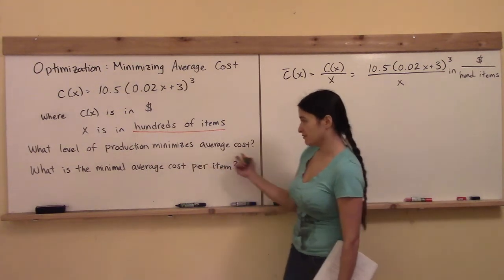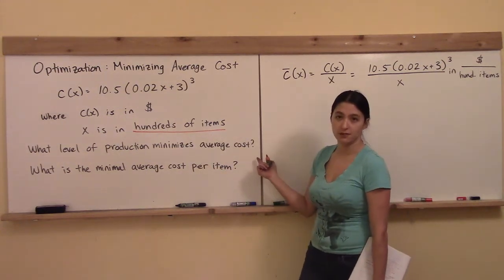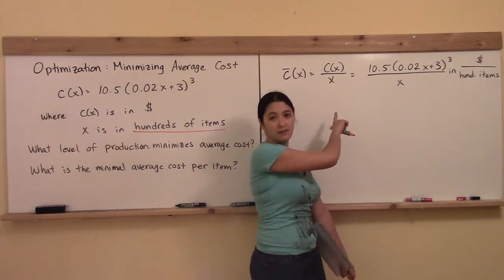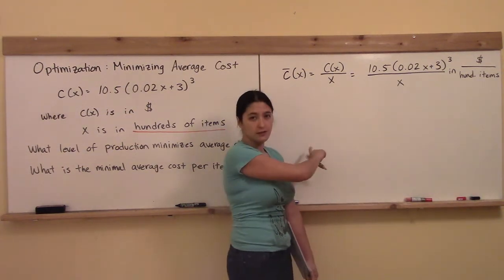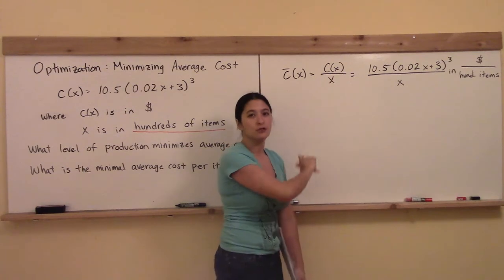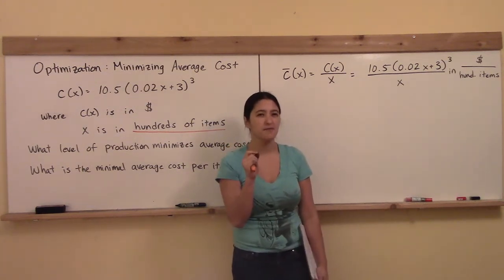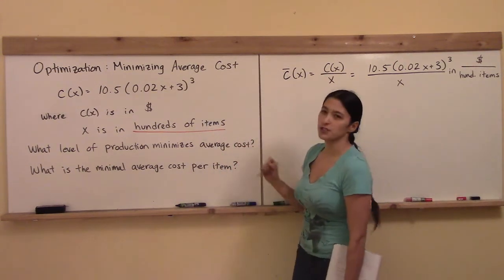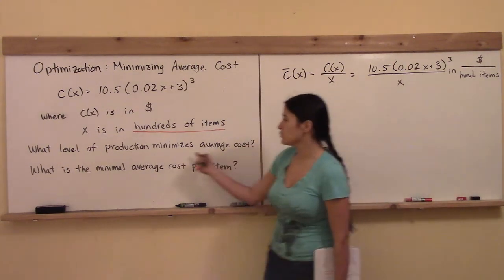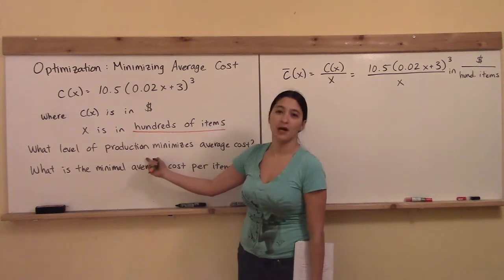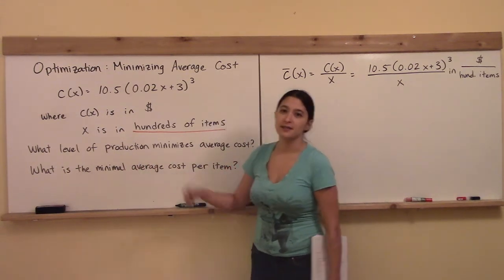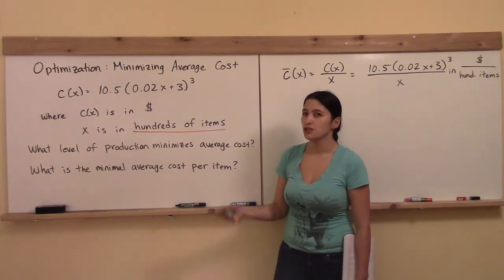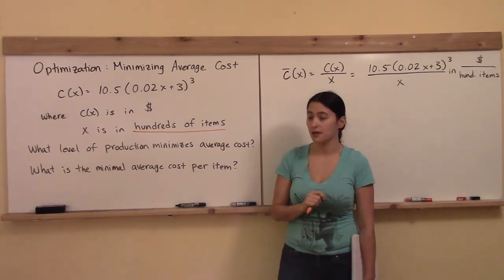We're going to have to keep that in mind the entire time as we try to answer the question: what level of production minimizes average cost? In the usual way, we will form average cost, take its derivative, solve for the critical points, locate the minima — but then when we have that minimum value of x, it's not in items. It's in hundreds of items. So if it asks you what level of production rounded to the nearest item, you're going to have to take it to two decimal places and multiply by 100 to get it rounded off to the nearest whole item.